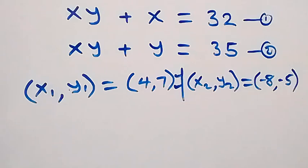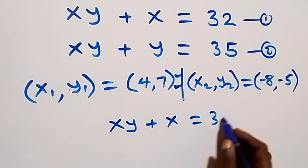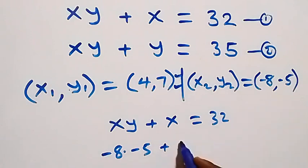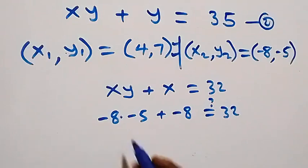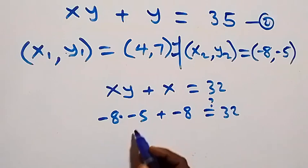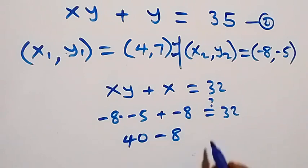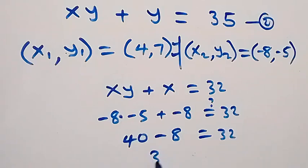For the second solution, substituting (−8, −5) into equation one — xy plus x equals 32 — we get negative eight times negative five plus negative eight equals 32. Negative times negative is positive, so that is 40 minus 8 equals 32, which is 32. This satisfies equation one.